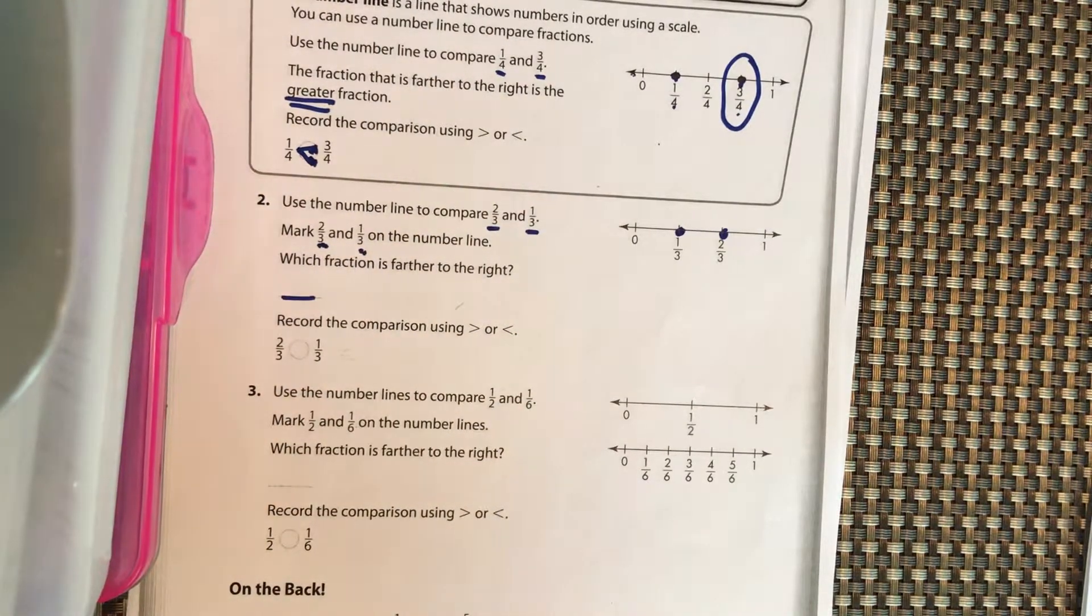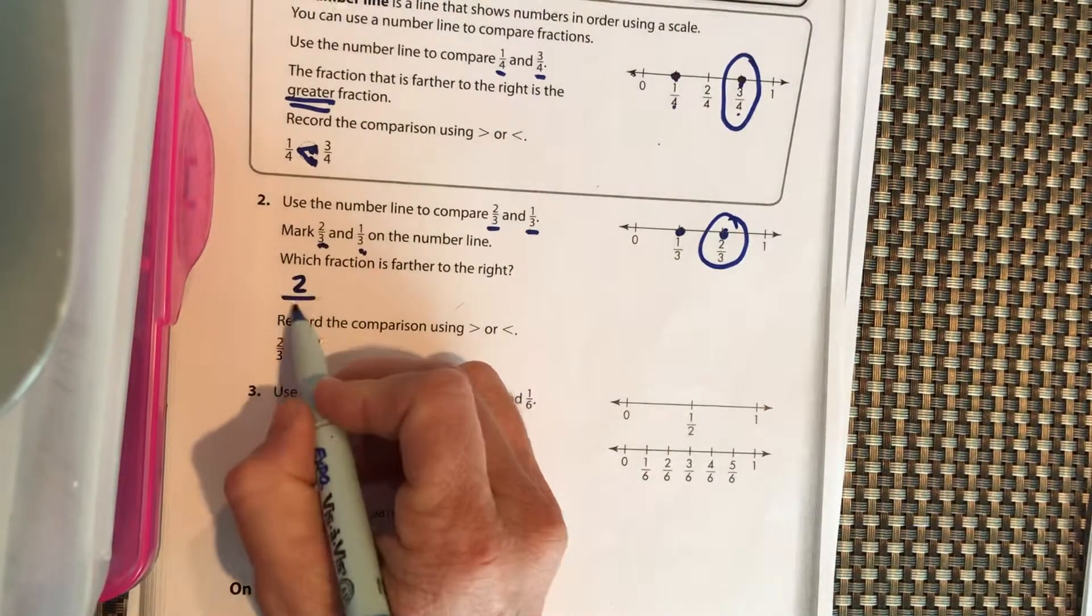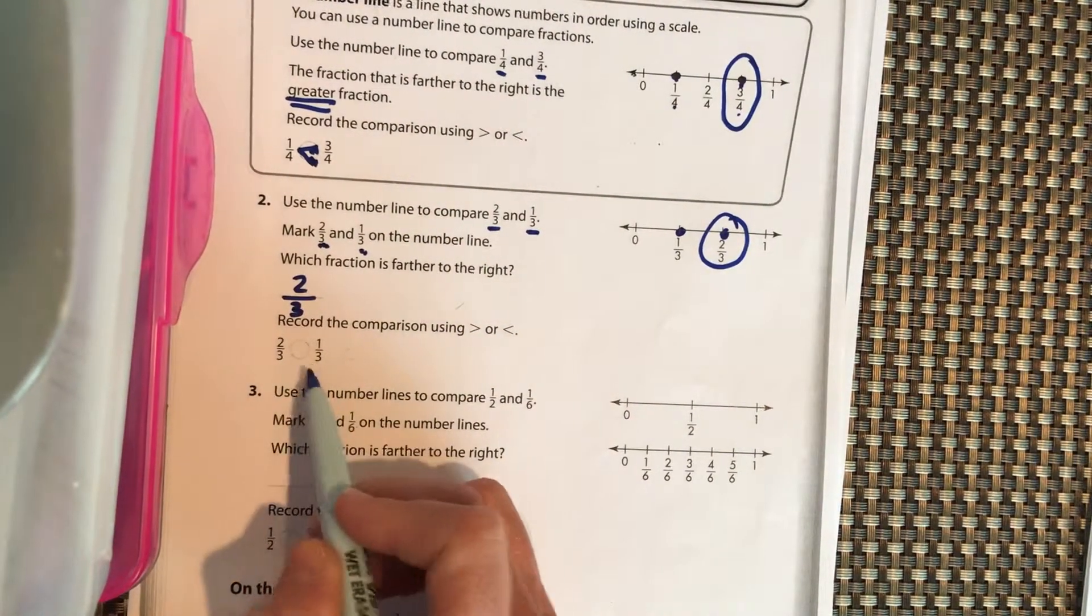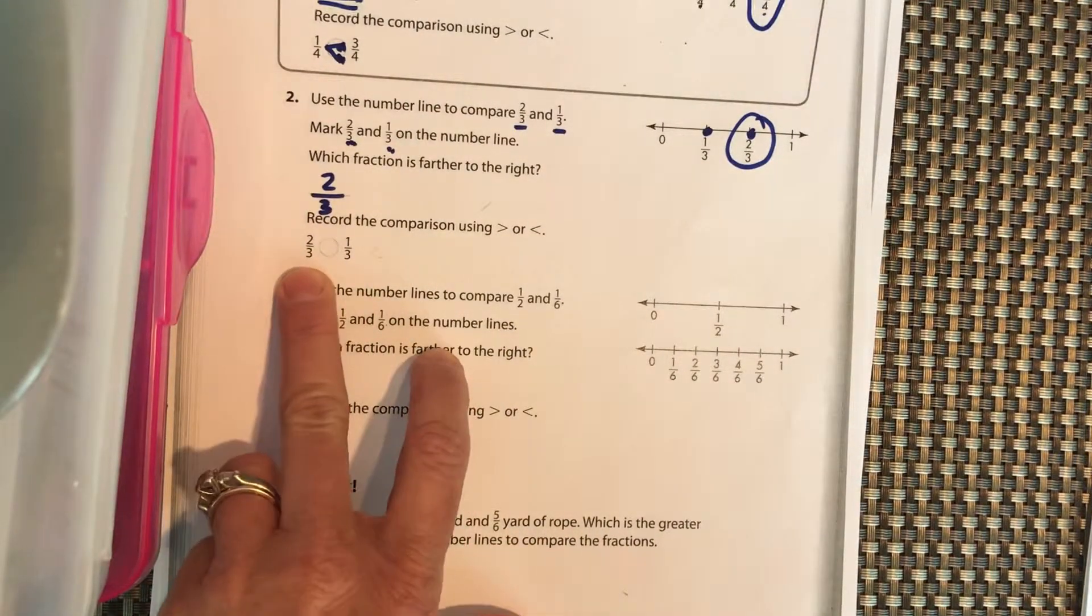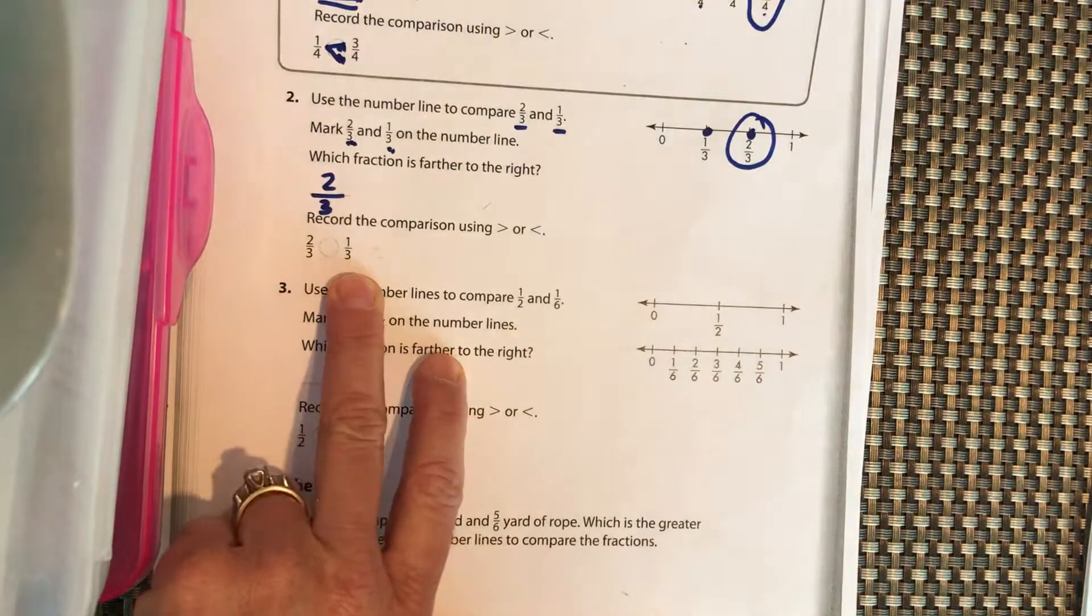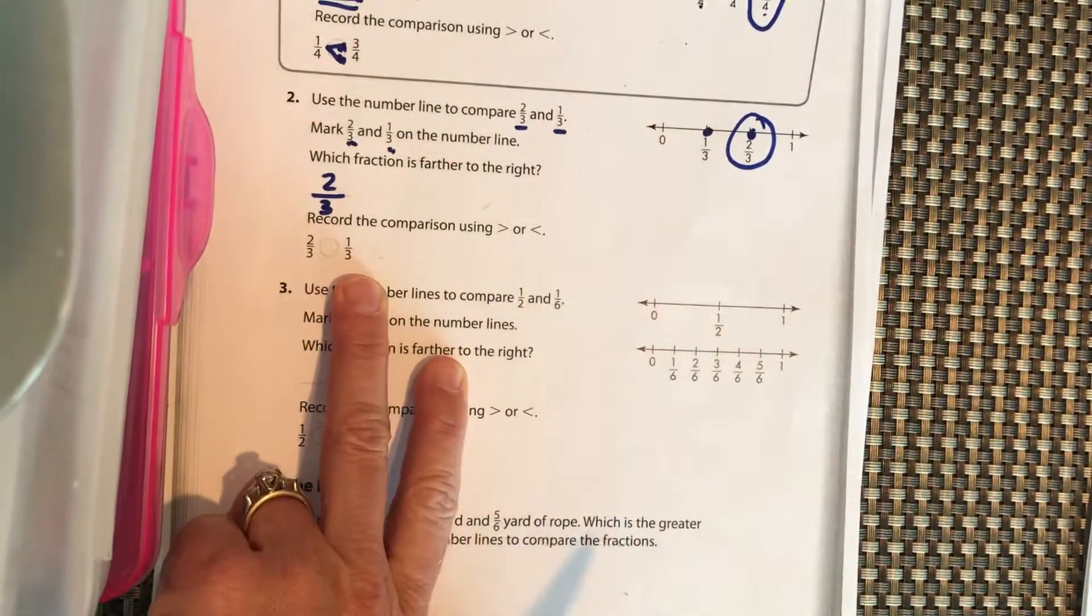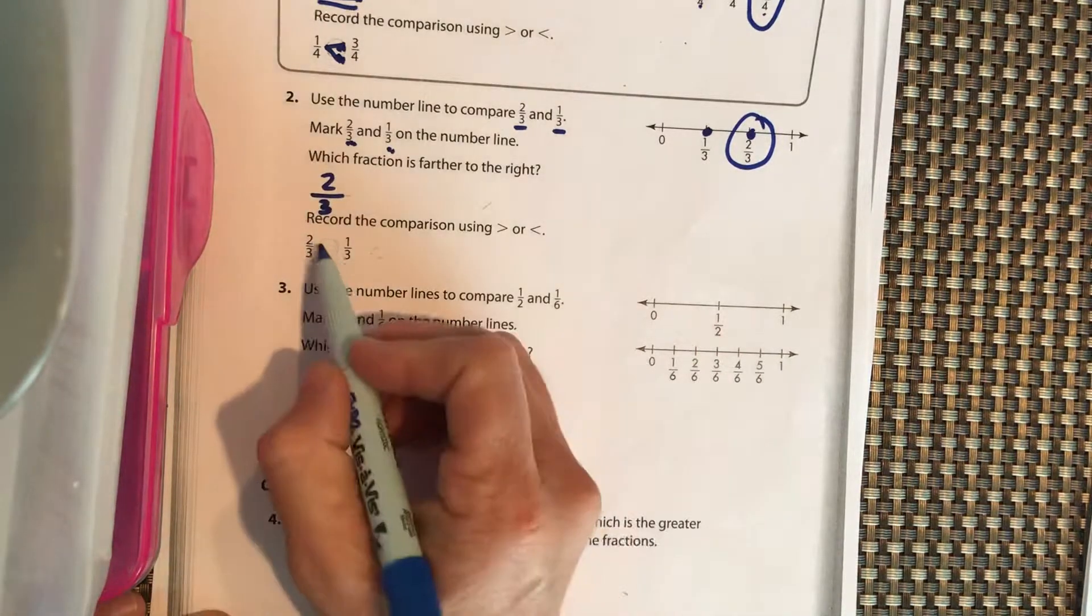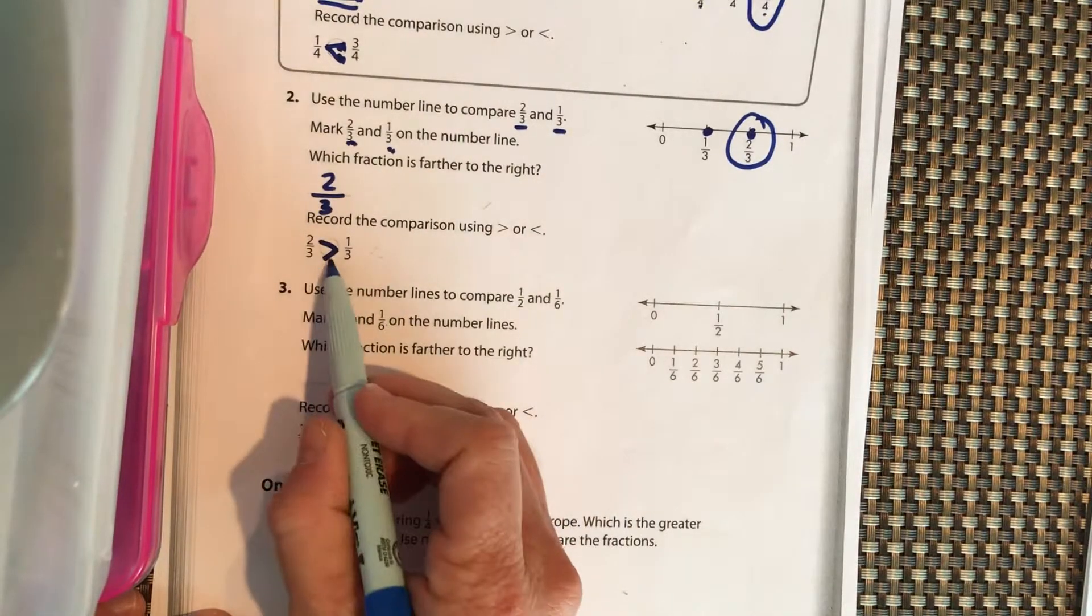You should have written 2/3, right. So now I want you to use greater than, less than to write that answer right there. 2/3 compared to 1/3, which one is greater, which one is less? Use greater than or less than. Should look like that, pointing to the smaller number. 2/3 is greater than 1/3.